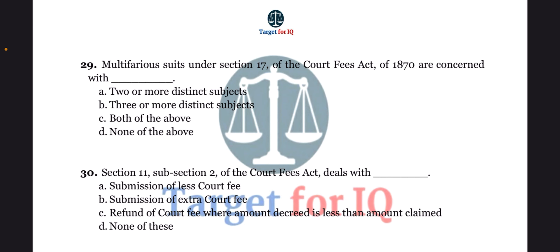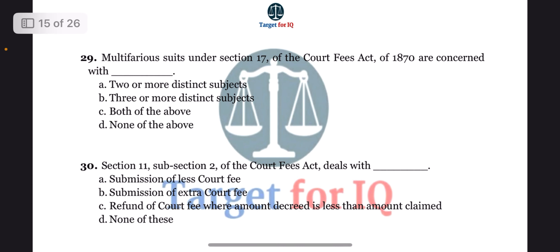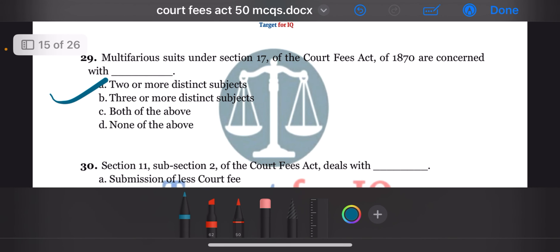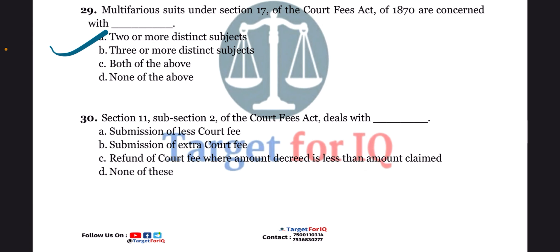Next question: multifarious suits under section 17 of the act are concerned with dash. The options are A. 2 or more distinct subjects, B. 3 or more distinct subjects, C. Both of the above, or D. None of the above. The correct answer is option A. 2 or more distinct subjects.